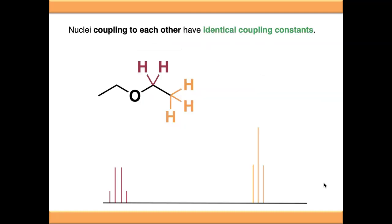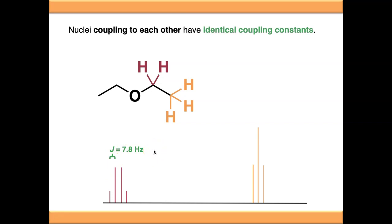An important thing to remember is that nuclei coupling to each other have identical coupling constants. The J value for these purple protons — arbitrarily 7.8 Hz, which is about right for this type of system — should be exactly the same as the J value measured from the triplet caused by the orange protons. You might see slight differences like 8 Hz vs 7.8 Hz, but that's due to experimental error and resolution in the spectrometer. On a perfect spectrometer, they would be absolutely identical.